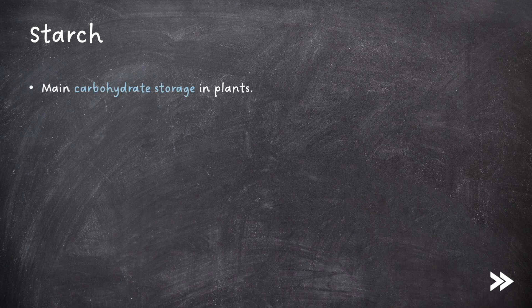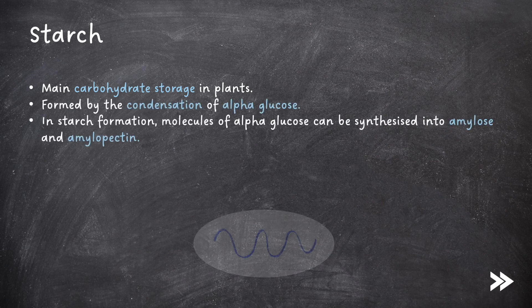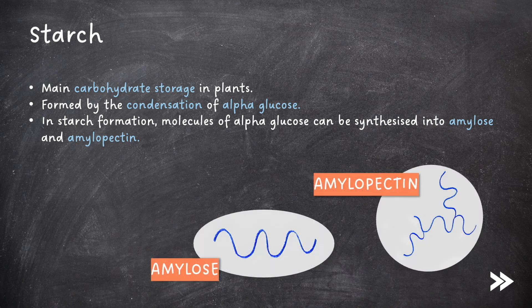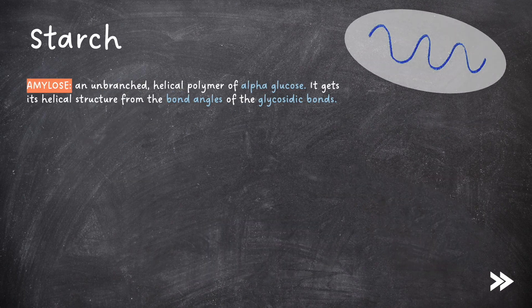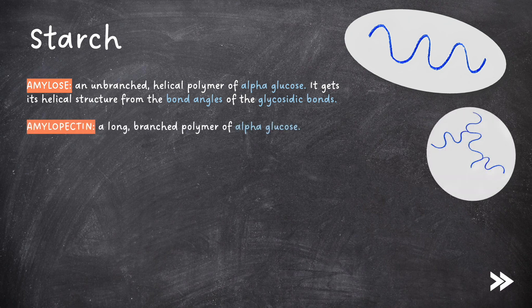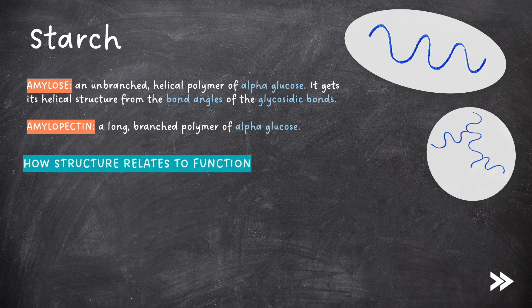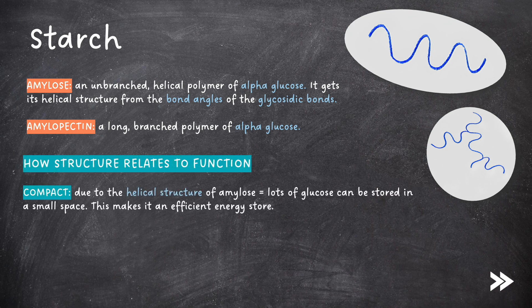Let's start off with starch. This is the main carbohydrate storage in plants. It is formed by the condensation of alpha glucose. In starch formation, molecules of alpha glucose can be synthesized into amylose and amylopectin, and starch is a mixture of the two. Amylose is an unbranched helical polymer of alpha glucose, and it gets its helical structure from the bond angles of the glycosidic bonds. Amylopectin, on the other hand, is a long, branched polymer of alpha glucose. Starch is compact due to the helical structure of amylose, so lots of glucose can be stored in a small space, making it an efficient energy store.